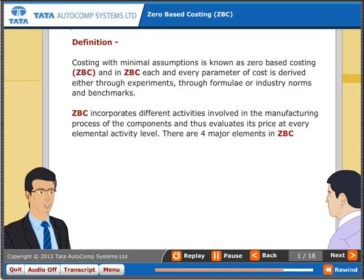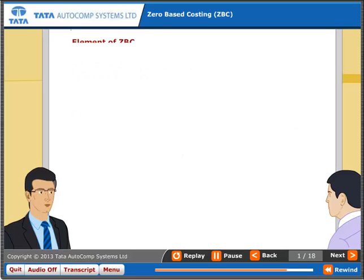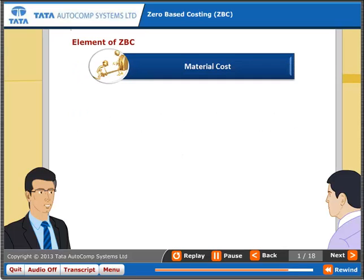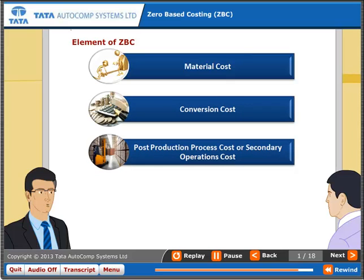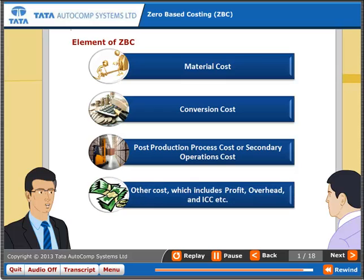There are four major elements in ZBC: material cost, conversion cost, post-production process cost or secondary operations cost, and other costs which include profit, overhead, and ICC etc.